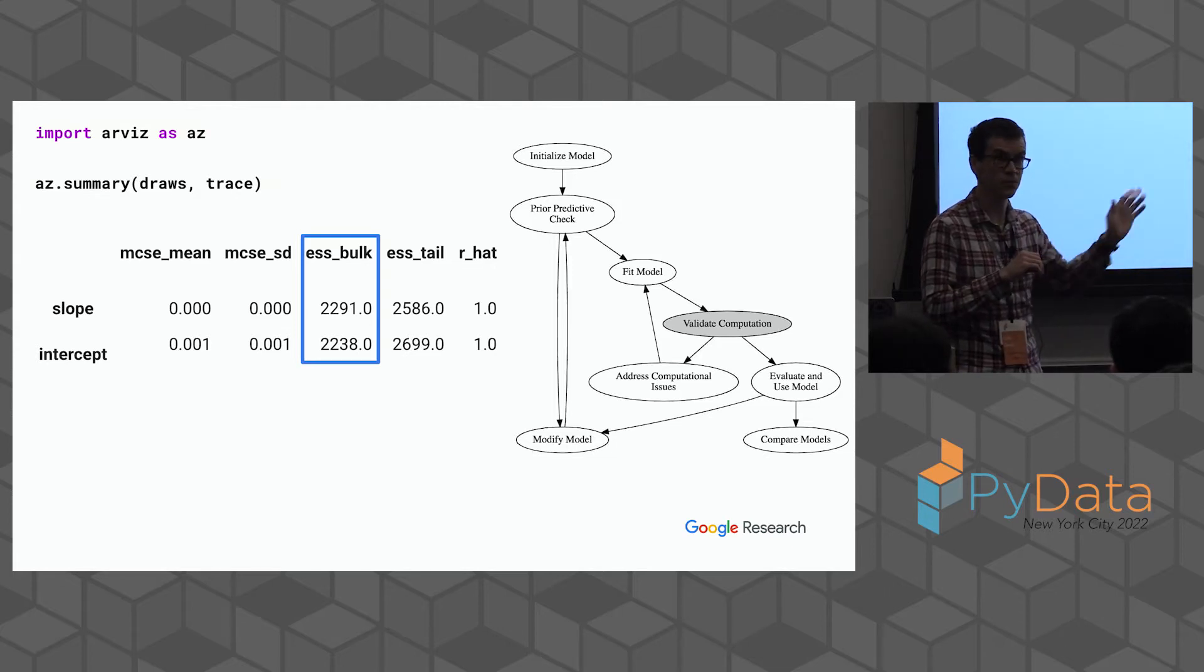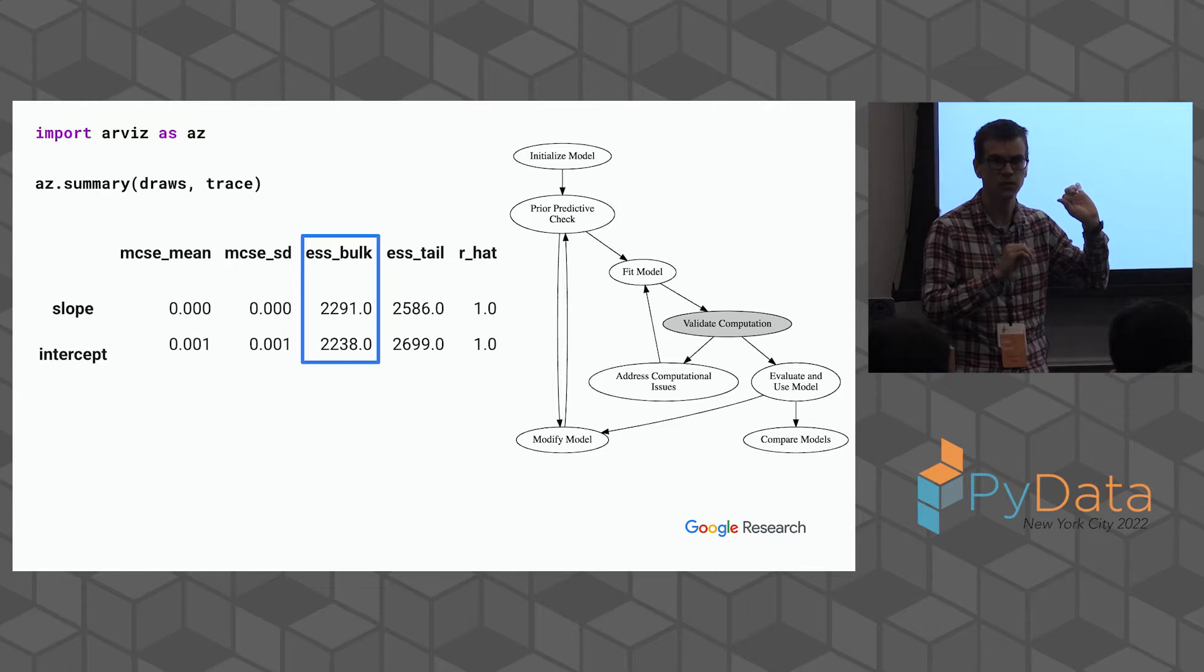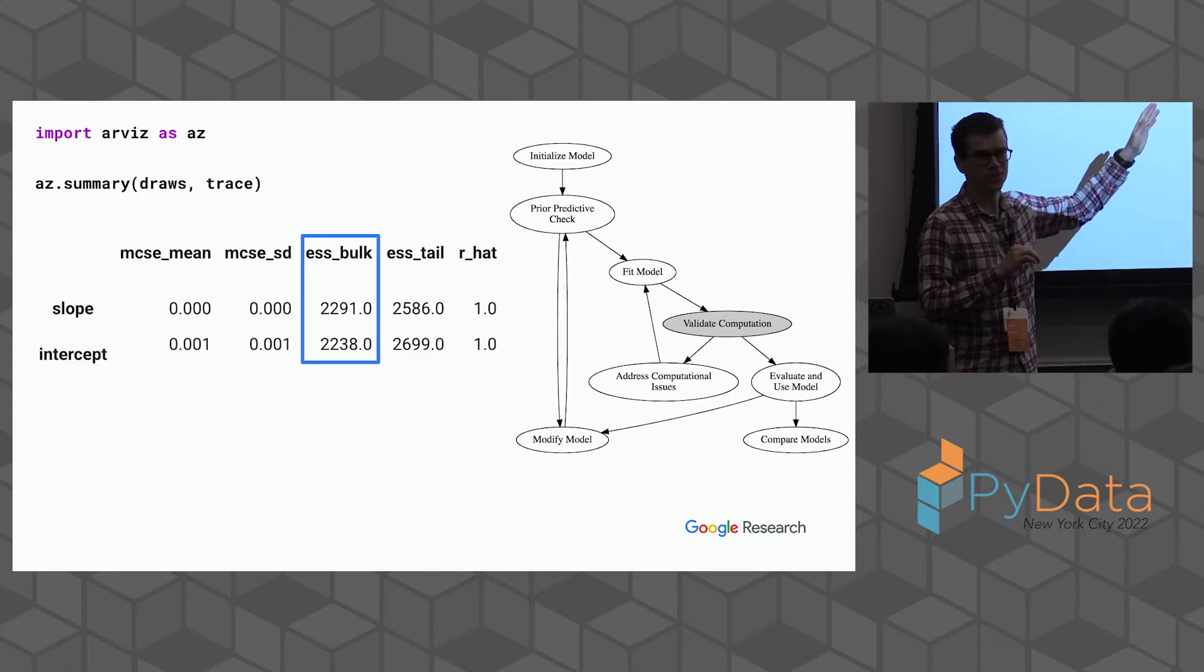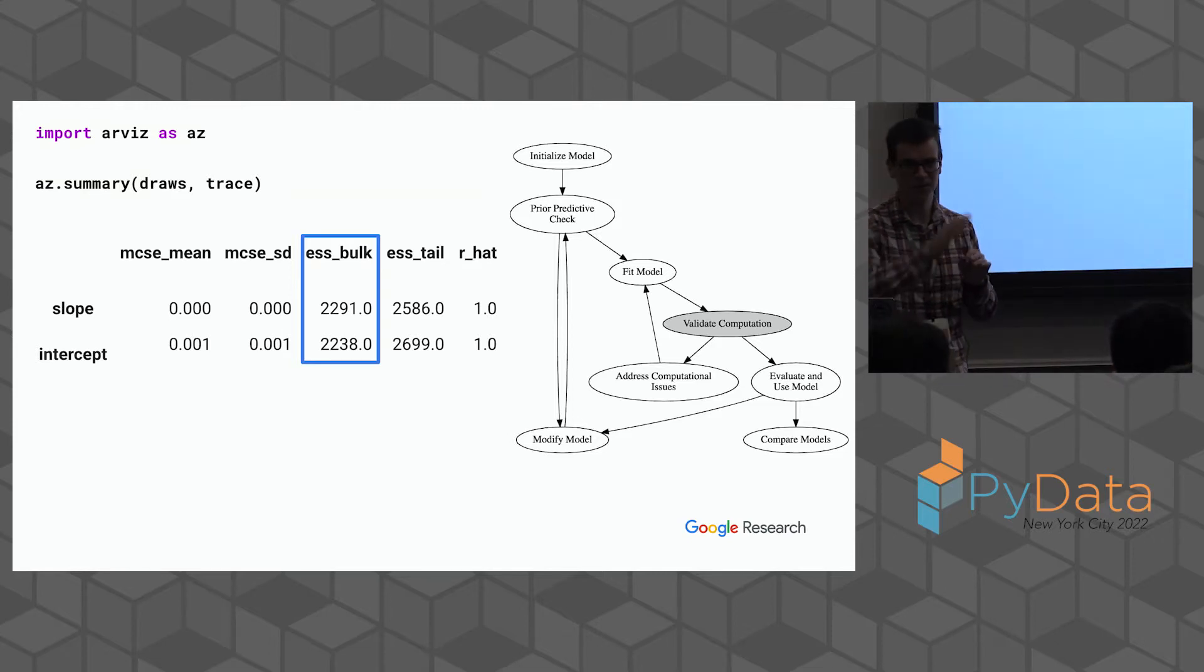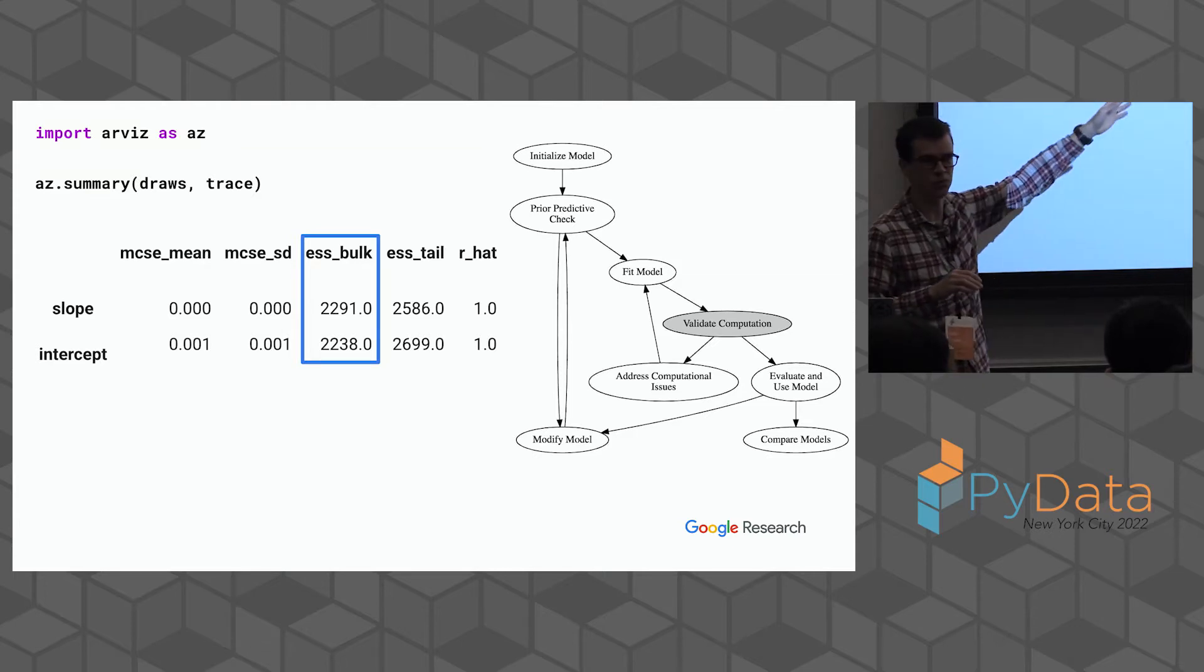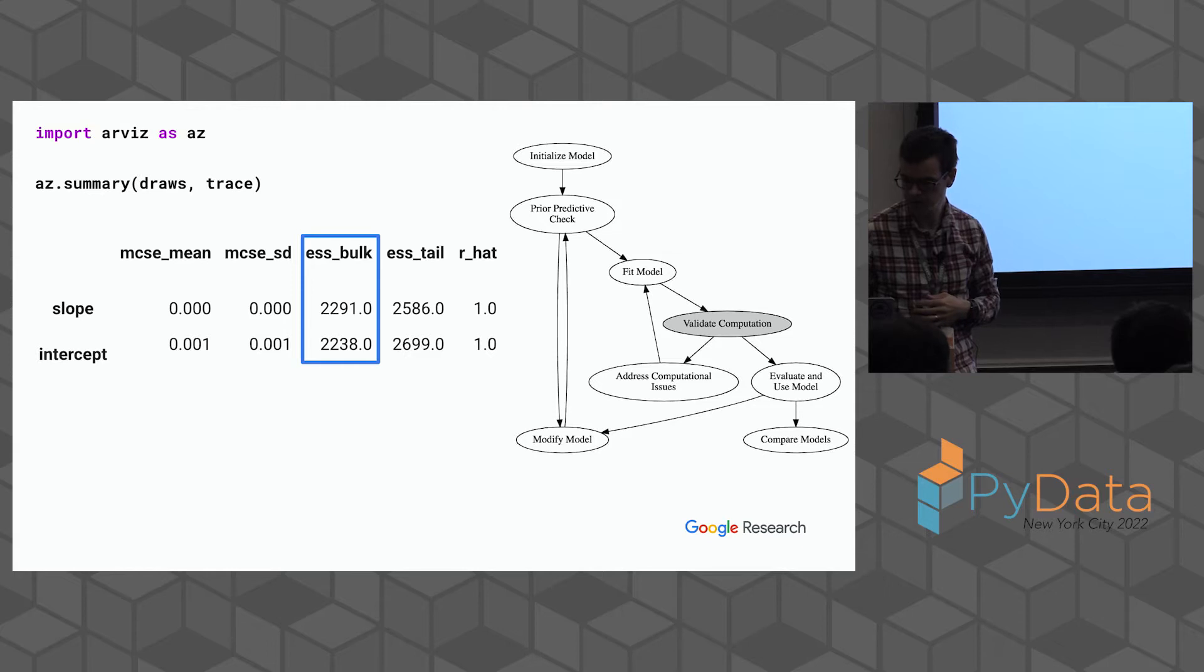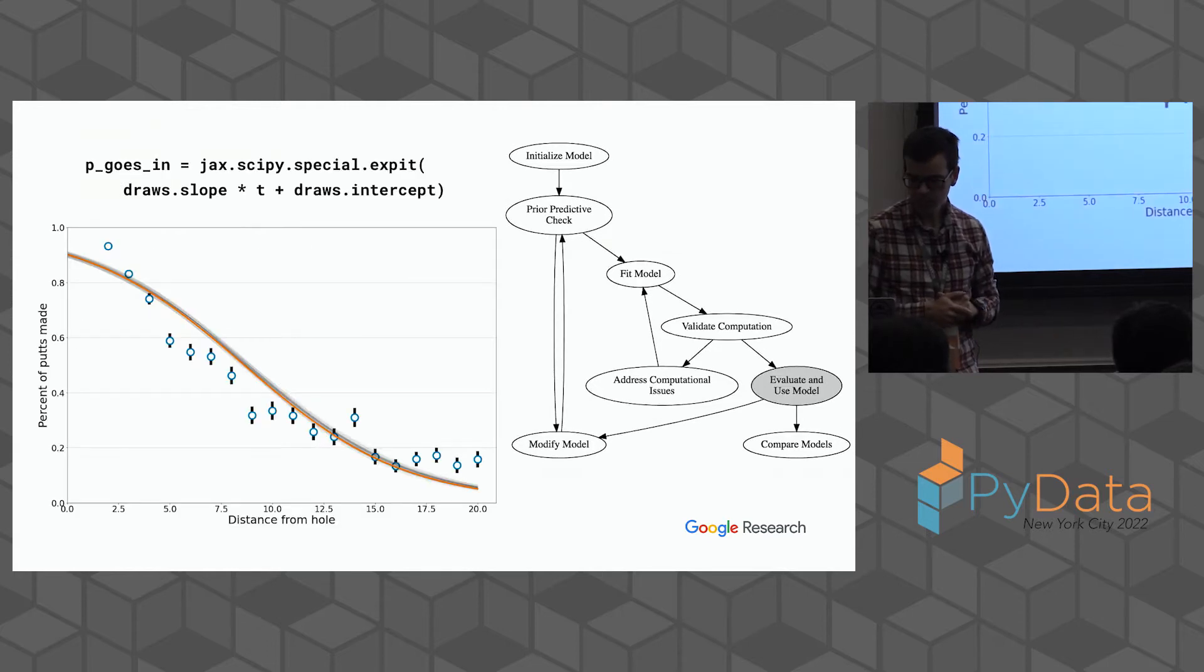In this model I actually ended up drawing 4,000 points but that's only worth 2,200 independent draws. But really if you're doing this usually like 100 is probably good enough. Your error goes down as the square root of the number of independent draws you have.